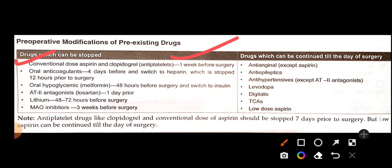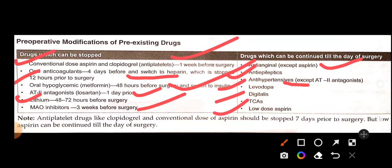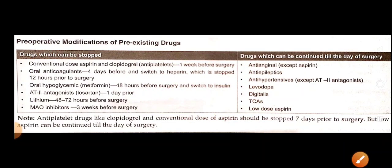Oral anticoagulants should be stopped 4 days before surgery and switched to heparin; heparin should be stopped 12 hours prior to surgery. Oral hypoglycemic metformin should be stopped 48 hours before surgery and insulin started. Angiotensin 2 antagonists like losartan should be stopped 1 day prior to surgery. Lithium should be stopped 48–72 hours before surgery. MAO inhibitors should be stopped 3 weeks before surgery. Antianginals (except aspirin), anti-epileptics, antihypertensives (except angiotensin 2 receptor antagonists), levodopa, digitalis, and tricyclic antidepressants should be continued. Low-dose aspirin can be continued till the day of surgery.